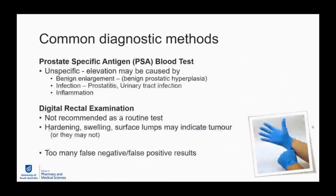The current gold standard for prostate cancer diagnosis is the PSA blood test, which tests for the protein prostate-specific antigen, or kallikrein-3. The problem is that it's nonspecific — it can be elevated due to benign enlargements such as benign prostate hyperplasia, or infections such as prostatitis or urinary tract infections. A more traditional method is the digital rectal examination, which is not recommended as a routine test and should only be performed by an expert urologist to complement high PSA results.